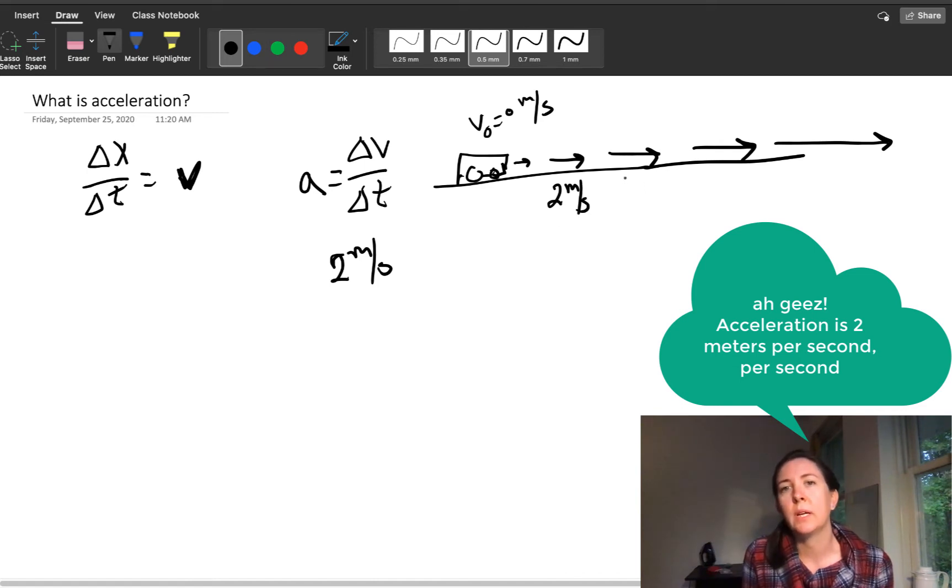One more second later it will be 4 meters per second, another second later 6 meters per second, and another second later 8 meters per second. This idea of my velocity changing 2 meters per second every second.